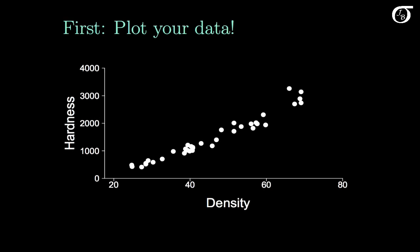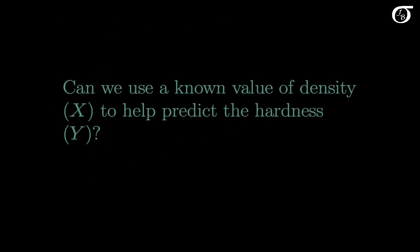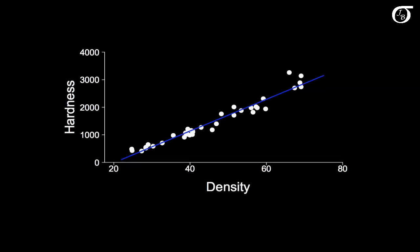The first thing we should do is plot out our data to see what we're working with. Here we have density as our X variable and hardness as our Y variable, and we do see a pretty clear relationship between the two of them. The question is, can we use a known value of density, our explanatory variable X, to help us predict the hardness, the response variable Y? Many times we attempt to do so by fitting a well-fitting line through those points, and then using that line for prediction.